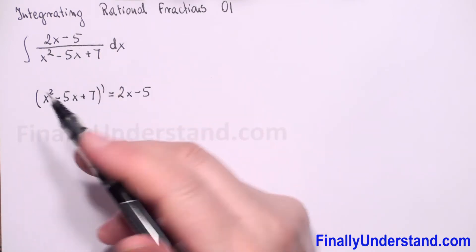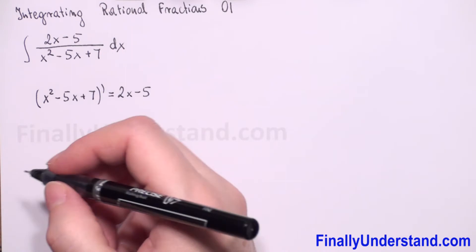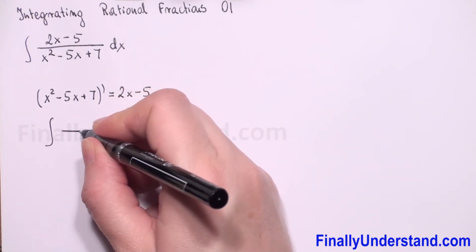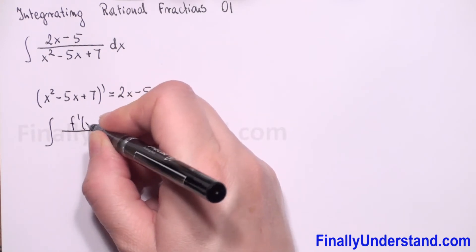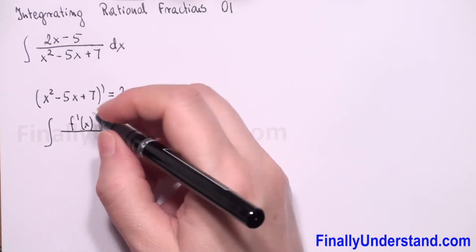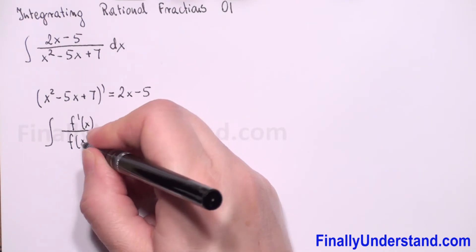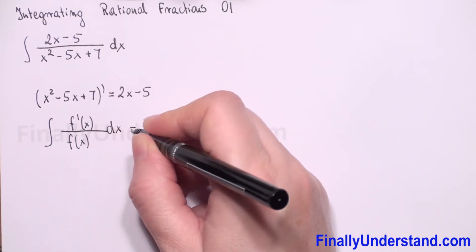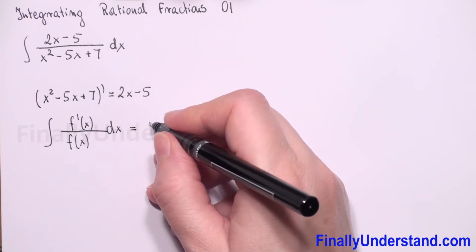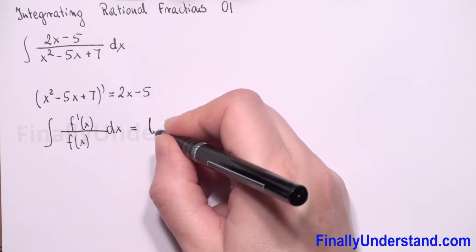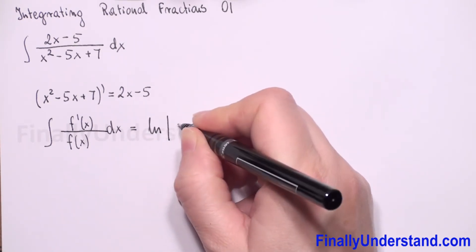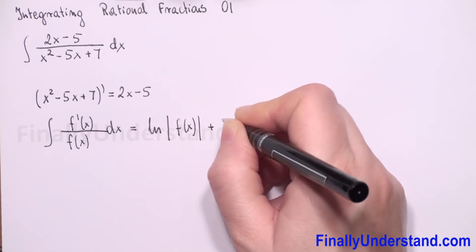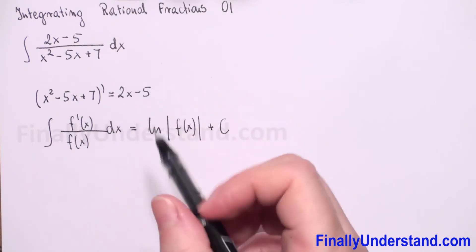It means we can use formula: integral of, in numerator we have derivative of denominator, with respect to x, this integral is equal to natural logarithm of absolute value of f of x plus constant c.